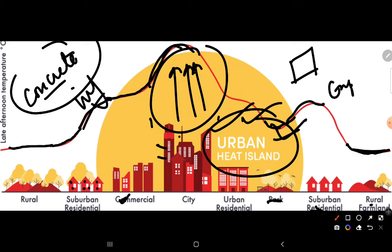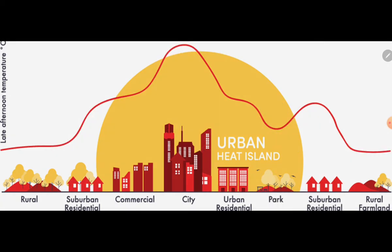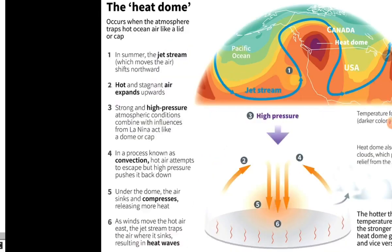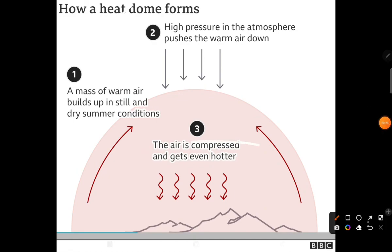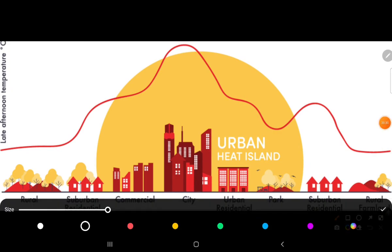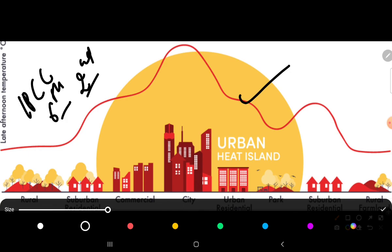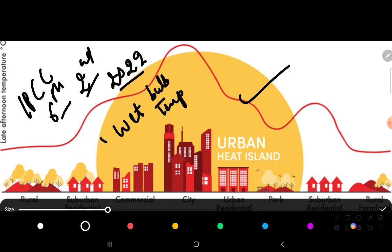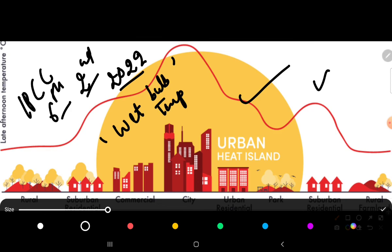So this is all for today. Humne aaj teen concepts ke baare mein baat ki: heat dome — what causes it and why it was in news — wet bulb temperature as mentioned in IPCC's 6th Assessment Report Part 2 of March 2022, and urban heat islands. These three concepts can be easily asked in your exam. Thank you, have a nice day, and I will see you in the next lecture with more geography concepts. Don't forget to like, share, and subscribe.